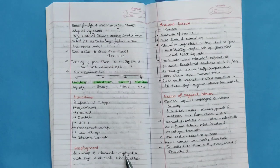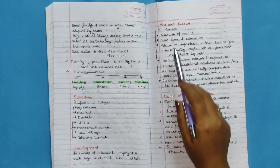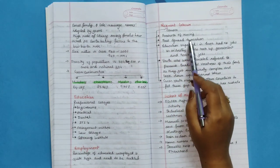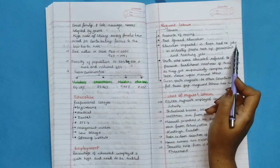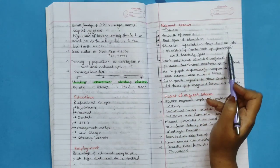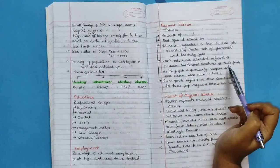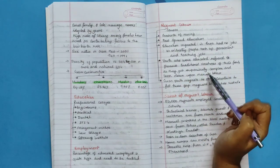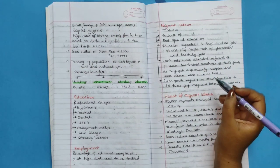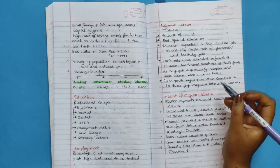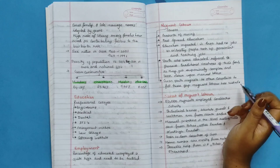Employment: percentage of educated unemployment is quite high and need to be tackled. Migrant laborer causes: growth of mining, fast spread of education. Education imparted in Goa had no jobs in industry. People took up government and teaching jobs. Youth who were educated refused to pursue traditional vocation of their family as they got superiority complex and looked down upon manual labor. Goan youth migrate to other countries. To fill this gap, migrant laborers has rushed.